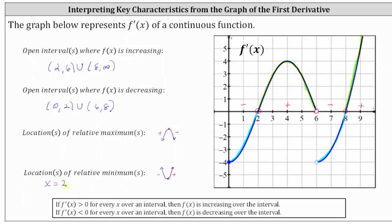Notice how the derivative changes from positive to negative at x equals 6, which means f of x changes from increasing to decreasing, indicating f of x has a relative maximum at x equals 6. I do want to mention here that even though the derivative function is undefined at x equals 6, we know f of x is continuous and defined at x equals 6.